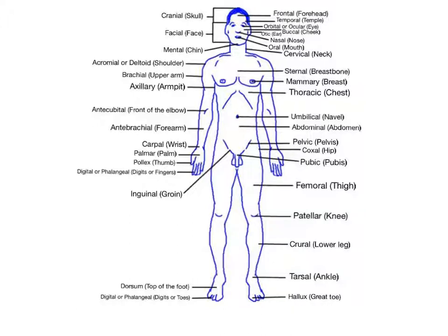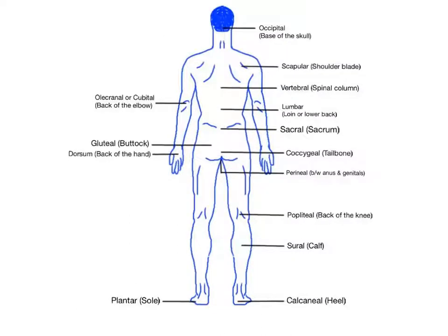Number seven: the sternal region is blank to the skin. The answer is deep. Number eight: the nasal region is blank to the orbital region. The answer is medial. Number nine: the patellar region is blank to the tarsal region. The answer is proximal.